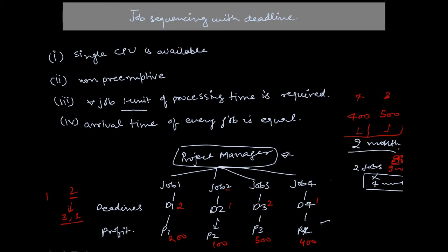This approach is greedy because we make locally optimal choices. First, we identify that Jobs 1 and 3 can be executed in the second month. Then we look at Jobs 2 and 4 and select Job 4 with maximum profit $400. Next, between Jobs 1 and 3, we select Job 3 with the second-best maximum profit. The solution total is $900.